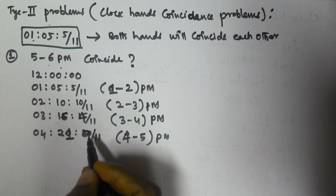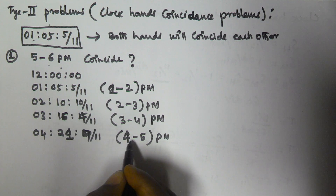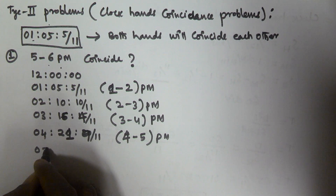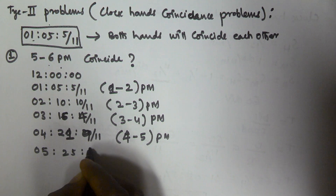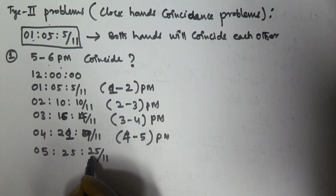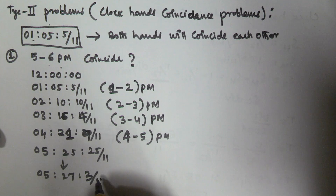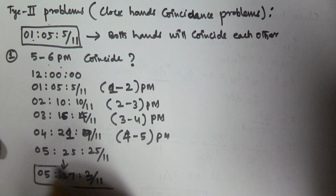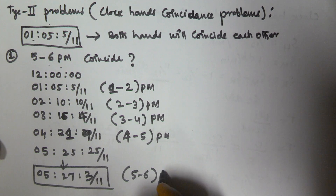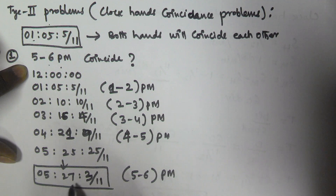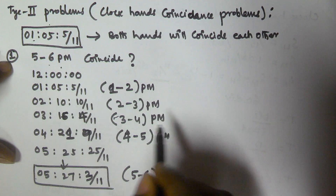Between 4 to 5 PM, at 4 hours 21 minutes 9/11 seconds both hands coincide. Next, multiplying by 5: 5 hours 25 minutes 25/11 seconds. Adding the carry of 2 minutes gives 5 hours 27 minutes 3/11 seconds. So between 5 to 6 PM, exactly at 5 hours 27 minutes 3/11 seconds both hands will coincide.